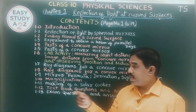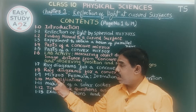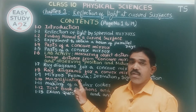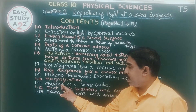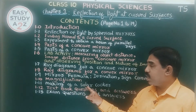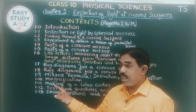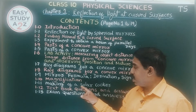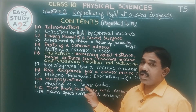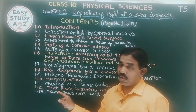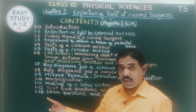Then we will discuss about magnification of the image. We will also discuss about making of a solar cooker and dish antenna.